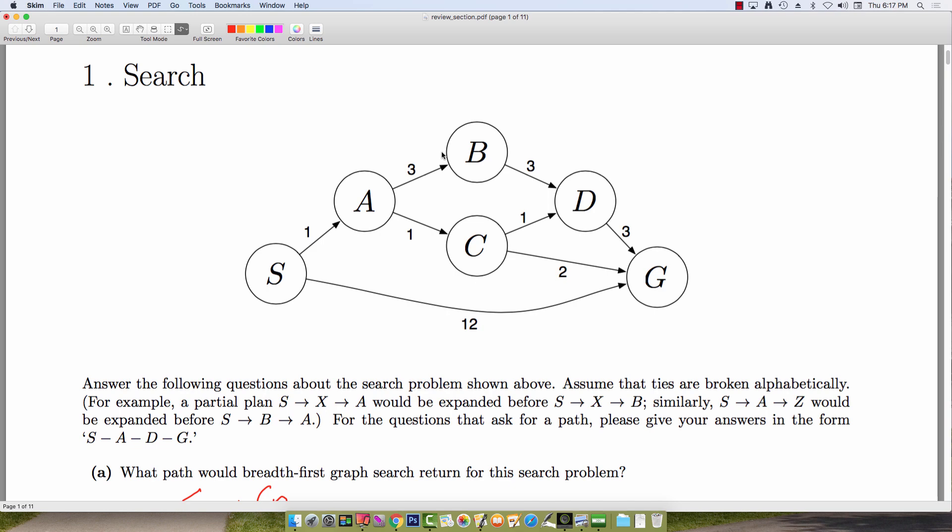For depth-first search, we'll continue the same procedure where we just modified the queue structure to be last-in-first-out now. So again, I'll insert S. I'll pull it off of the fringe. And I'll insert A and G into the queue, both at the same level.